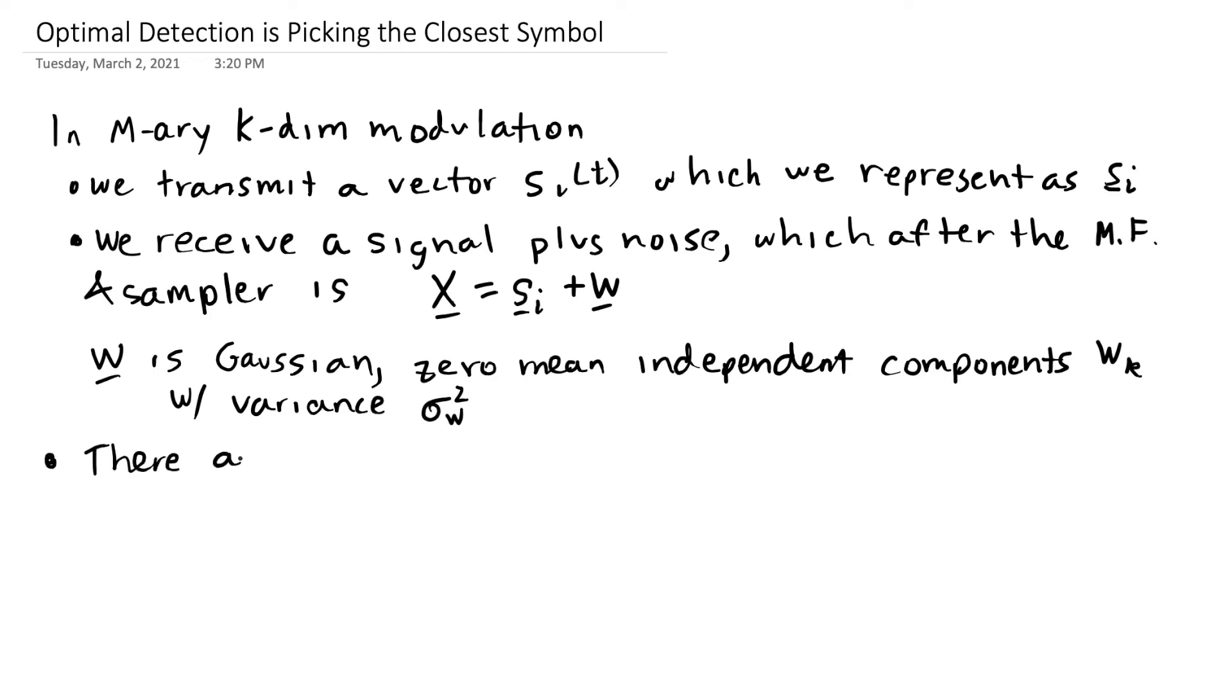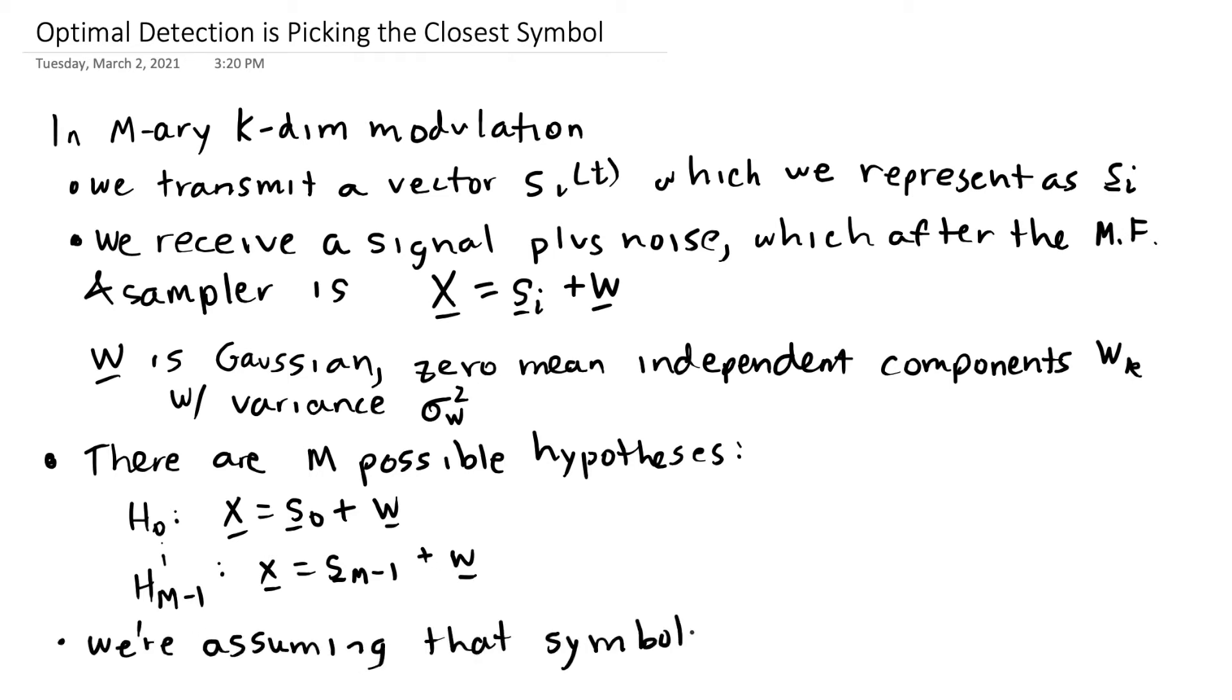There are capital M hypotheses. We'll name them H sub zero to H sub M minus one, and each one is equal to the symbol vector that was sent plus this vector W. And finally, we're going to assume that symbols are equally likely.